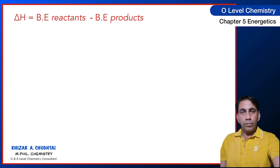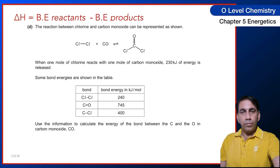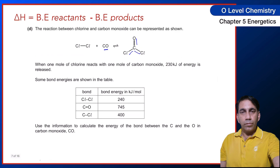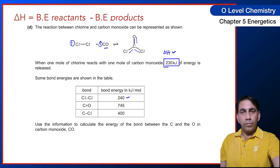I'm again using the formula delta H equals bond energy of reactants minus bond energy of products. In this example, the reaction between chlorine and carbon monoxide is: Cl–Cl plus C≡O goes to a product with C=O and two C–Cl bonds. When one mole of chlorine reacts with one mole of carbon monoxide, 230 kJ of energy is released, so delta H is given as minus 230 kJ/mol. Some bond energies are shown in a table: Cl–Cl is 240, C=O is 745, and C–Cl is 400. We need to use this information to calculate the bond energy between carbon and oxygen in carbon monoxide.